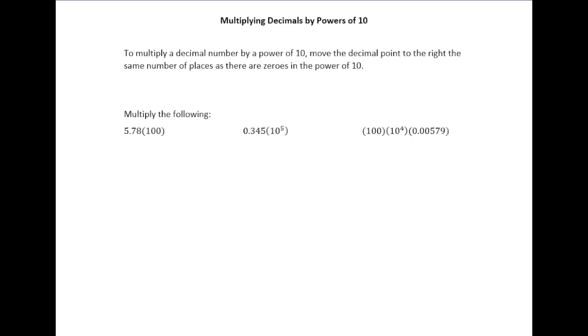Let me give the rule that we follow, and then we'll talk about why that makes sense. To multiply a decimal by a power of 10, move the decimal point to the right the same number of places as there are zeros in the power of 10.